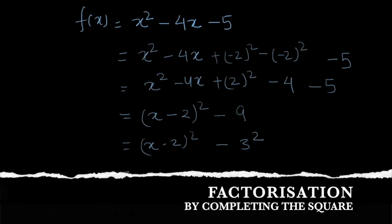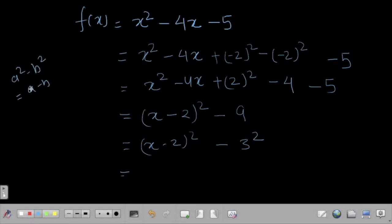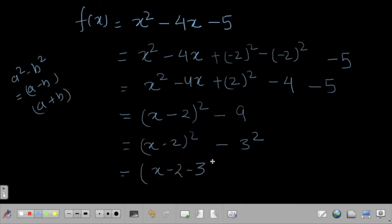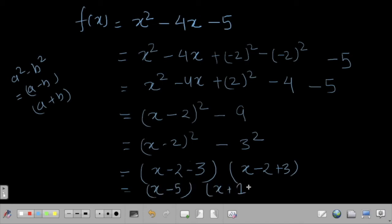Now this is in the form a² - b², and we know that a² - b² = (a - b)(a + b). So we can factorize it as (x - 2 - 3)(x - 2 + 3), which equals (x - 5)(x + 1). This is the same factorization we got using the first method.